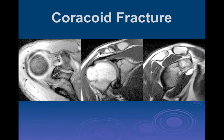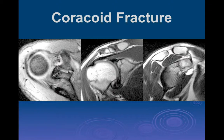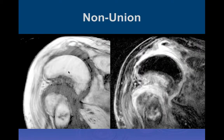Don't forget coracoid fractures — these are easy to overlook, especially in kids where the normal physis can be confused with a fracture. In this case, the fracture is separate from the normal physis and is more comminuted — essentially a Salter-Harris type fracture involving the physis of the coracoid process.